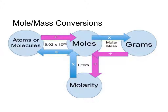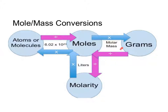We can use this flowchart to see how to do many of the conversions that we will do using moles. We can see that if we know the number of atoms or molecules, we can divide that by Avogadro's number and that will give us a number of moles. Or if we know the number of moles and we want to calculate grams, we can multiply by our molar mass. If we know the number of grams and we want to calculate the number of atoms or molecules, we divide our grams by our molar mass to first get the number of moles, and then multiply the number of moles by Avogadro's number.